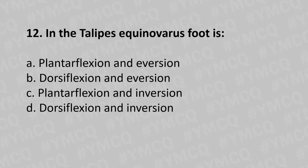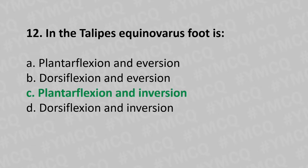Moving to our 12th question: in talipes equinovarus, the foot position is — option A plantar flexion and eversion, option B dorsiflexion and eversion, option C plantar flexion and inversion, option D dorsiflexion and inversion. And the answer is option C plantar flexion and inversion.